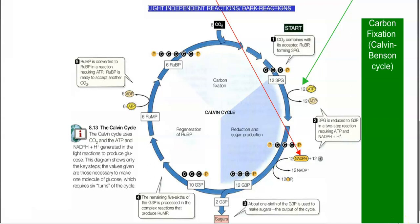Finally, about one-sixth of the glyceraldehyde-3-phosphate is used to make sugars — that is, to make glucose and other sugars such as amylose or cellulose in the plant system. Whereas the remaining five-sixths of the glyceraldehyde-3-phosphate molecules are further processed by complex reactions in order to produce ribulose monophosphate. Again, with the help of ATP, the ribulose monophosphate is converted into ribulose bisphosphate, which is the actual molecule that accepts carbon dioxide and is involved in the continuation of the carbon cycling process.